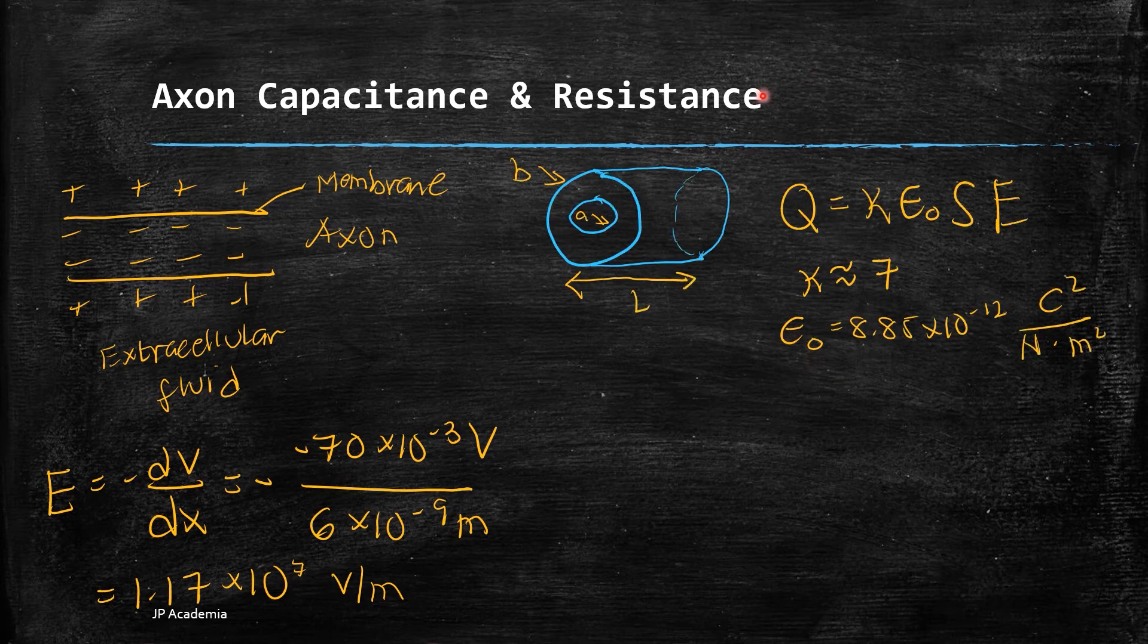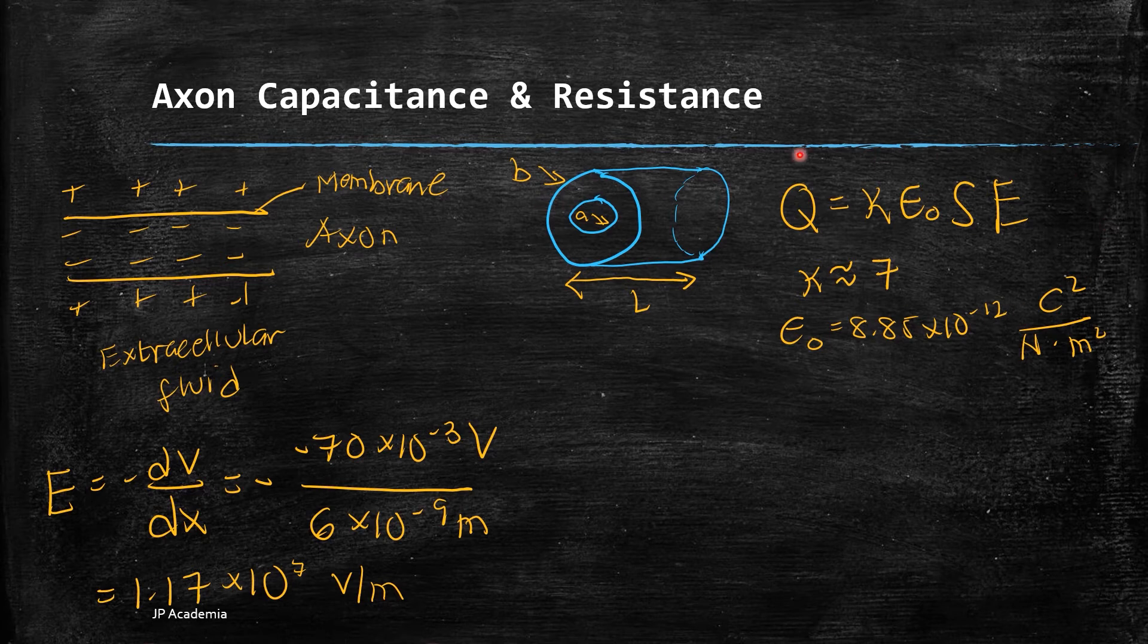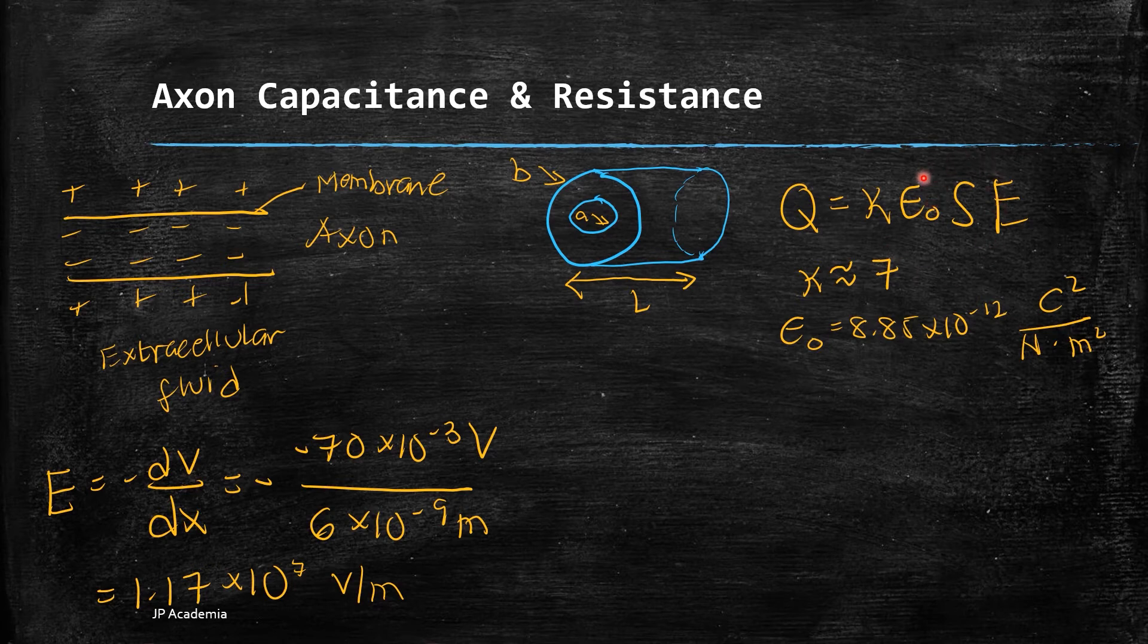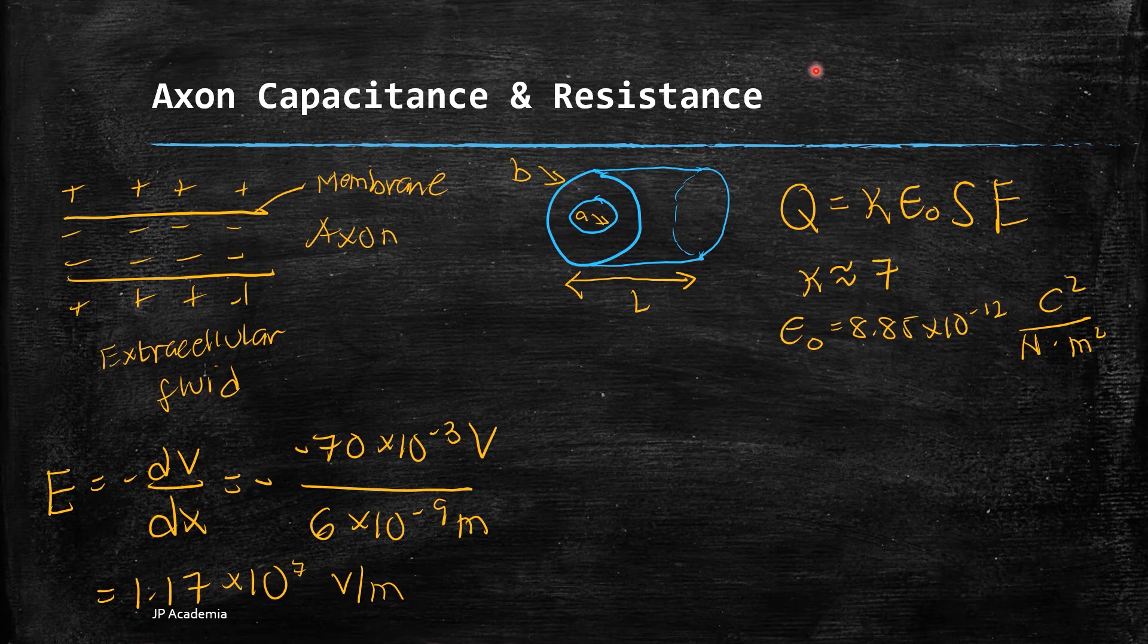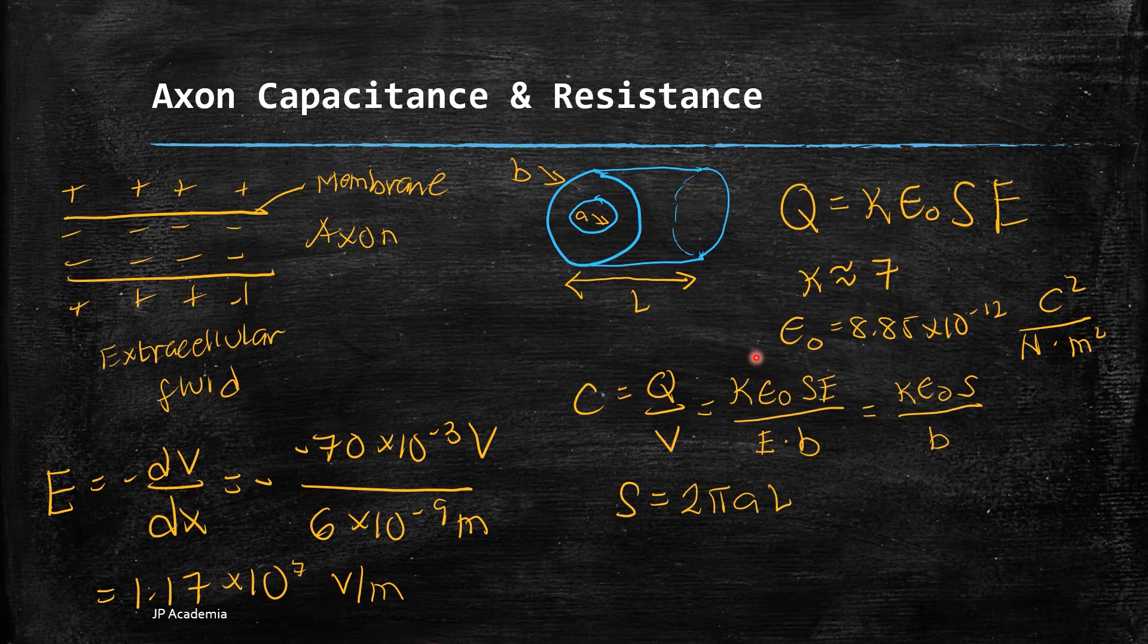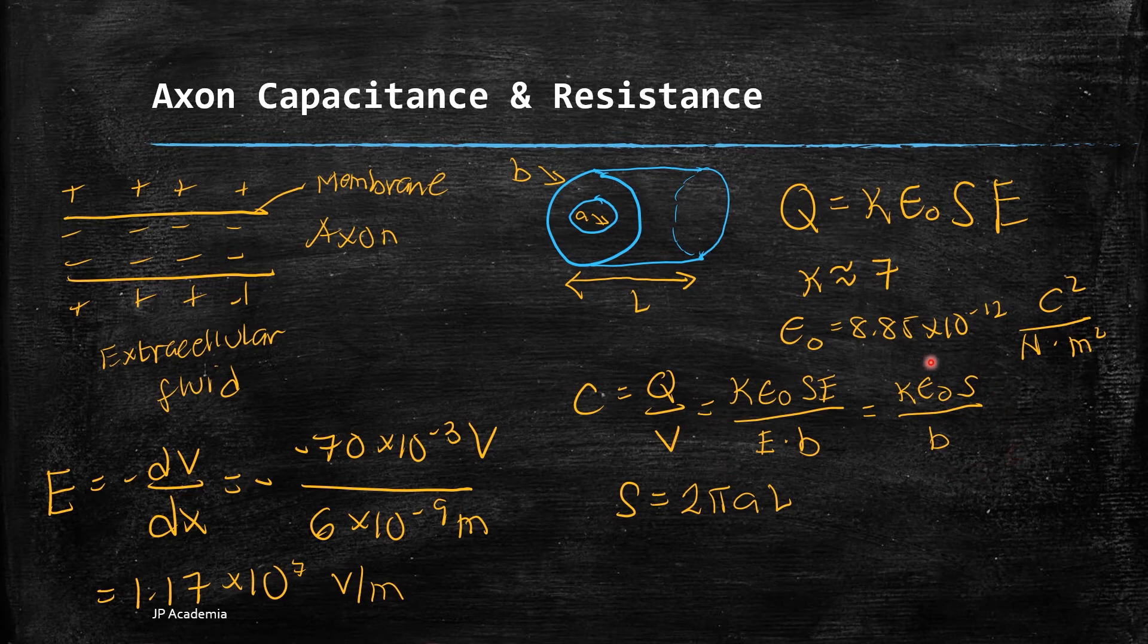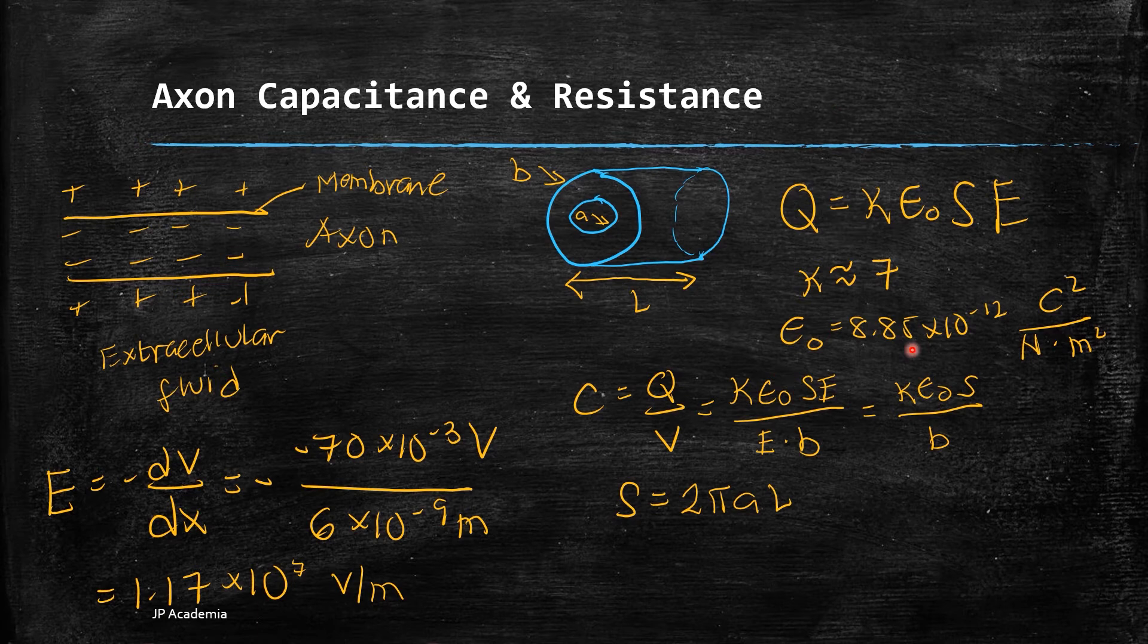Now, let us consider the axon membrane as a cylindrical capacitor with radius A and thickness B. We can express the accumulated charge Q at the membrane surface S as Q = κε₀SE, where κ is about 7 and ε₀ is the electrical permittivity constant in free space. The capacitance for the membrane with thickness B is C = Q/V = κε₀S/B. You can also get the total charge across the axon membrane by multiplying C times V.